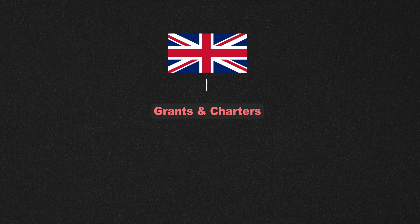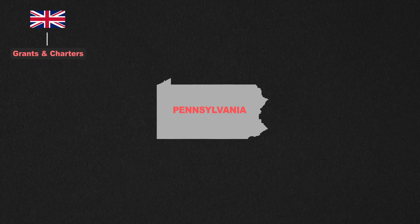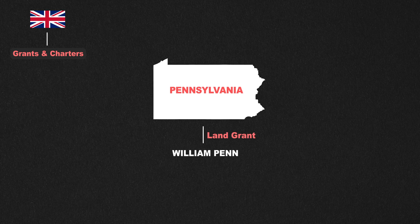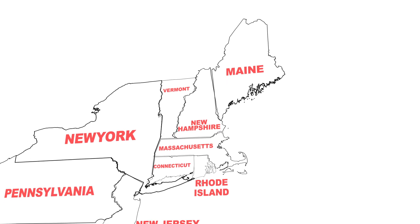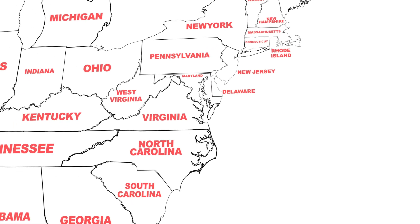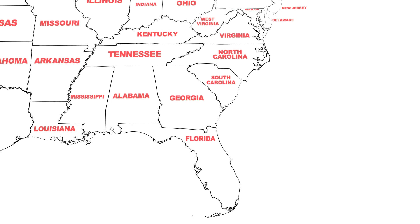The English monarchy issued land grants and charters to individuals and companies, resulting in irregular shapes for some colonies. For instance, Pennsylvania's rectangular shape can be attributed to the land grant to William Penn, while Delaware's small size and irregular shape are a consequence of a land grant to the Duke of York. Furthermore, the coastal states have a natural irregularity to their coastal borders because of the very shape of the eastern coastline of the United States.